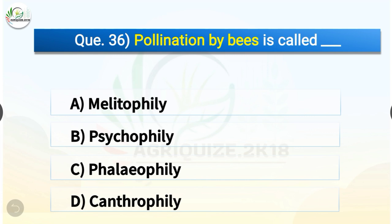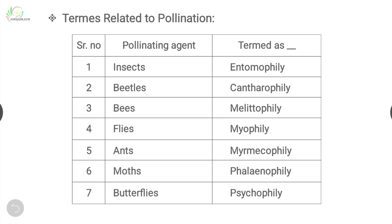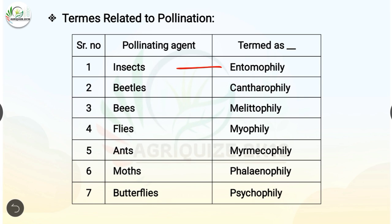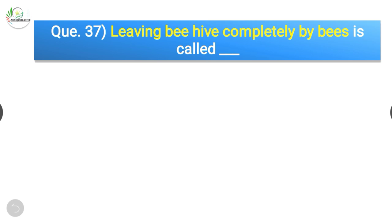Question number thirty-six: pollination by bees is called — options are melitophily, psychophily, phalaenophily, or cantharophily. The correct answer is option A, melitophily. For beetles it is cantharophily, for bees it is melitophily, for flies it is myophily, for ants it is myrmecophily, for moths it is phalaenophily, and for butterflies it is psychophily.